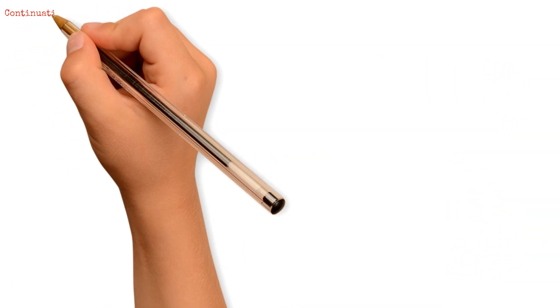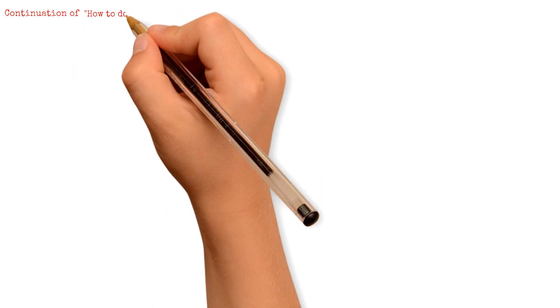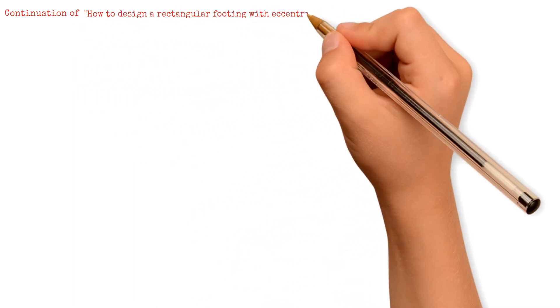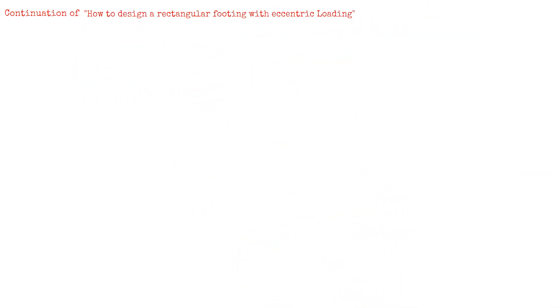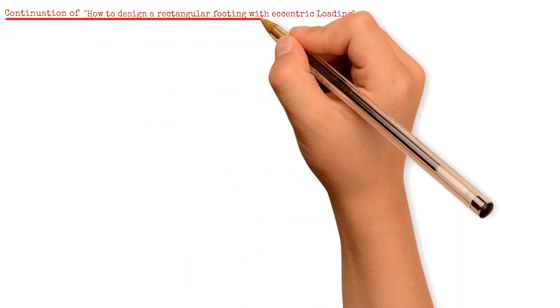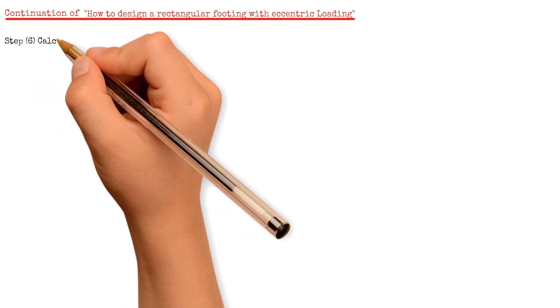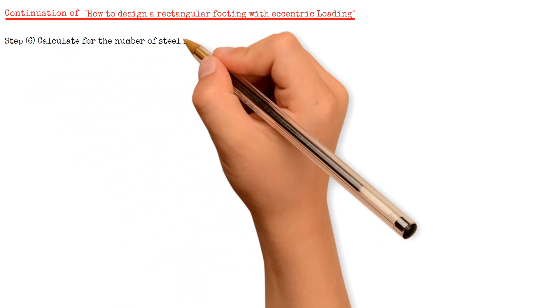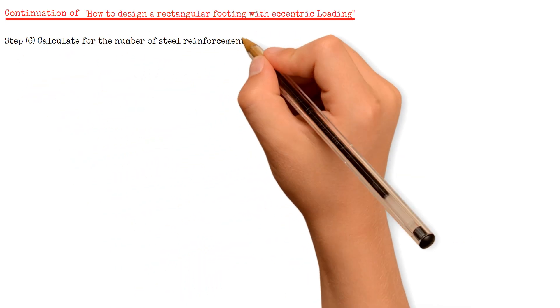Welcome back to the channel. This is a continuation of our previous video, which was the design of a rectangular footing with eccentric loading. And now for the sixth step, we will calculate for the number of steel reinforcement of the footing.